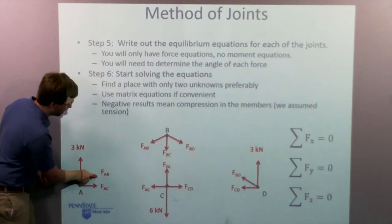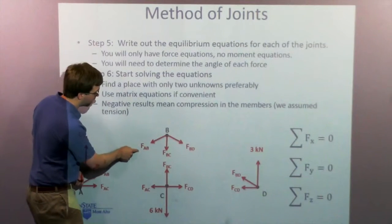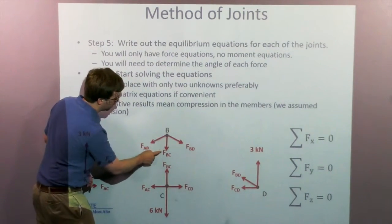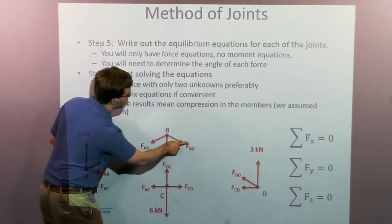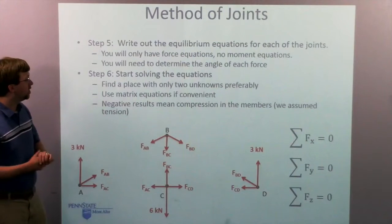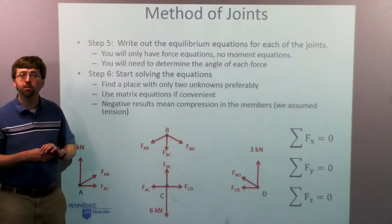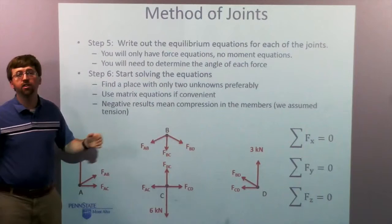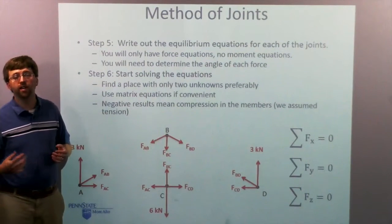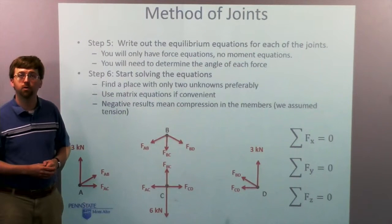Once I find FAB, it's going to help me over here. So now I already know this force here. I've got two more unknowns, FBC and FBD. I can solve for those at the top and kind of work my way across. Or if it's more convenient, sometimes we just want to write out all the equations and then I'm going to convert that system of equations into a matrix and I can solve it in one fell swoop.